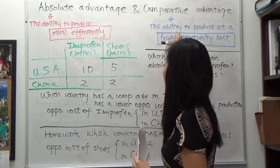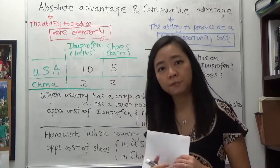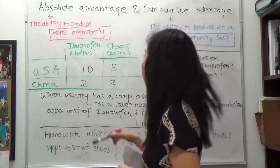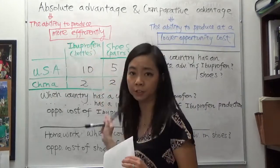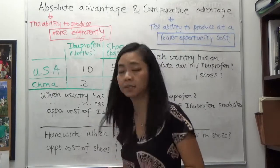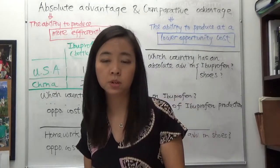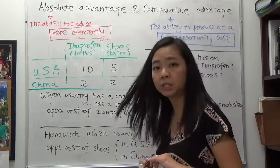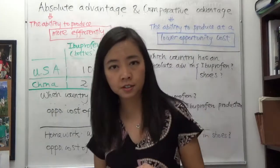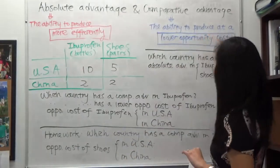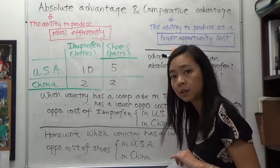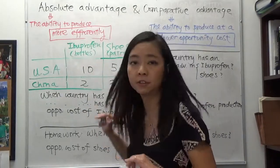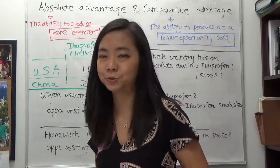The difference between the two is this: the definition of absolute advantage is the ability to produce a good more efficiently — so with the same resource you can produce more, then you're more efficient. And the definition of comparative advantage is the ability to produce a good at the lower opportunity cost. So once you realize the difference between the two definitions, you will not get them confused.